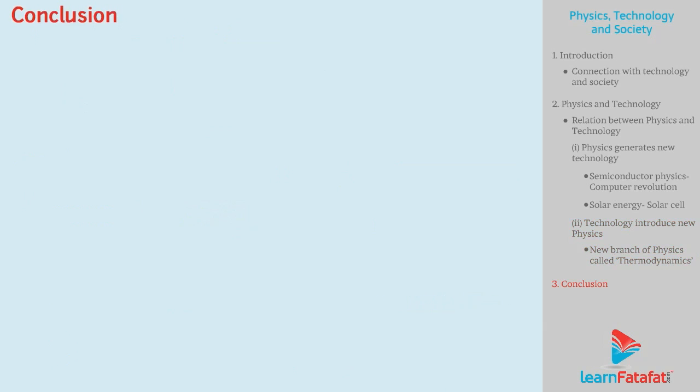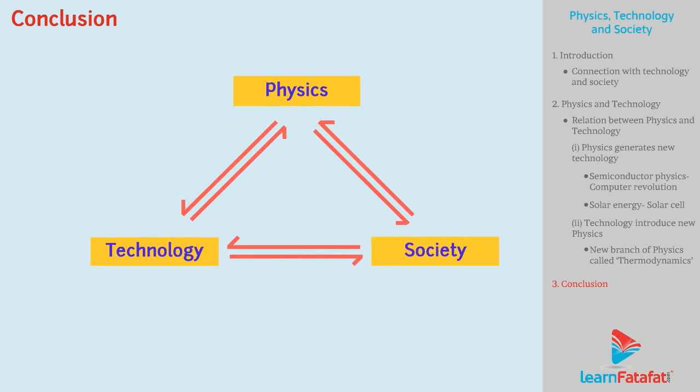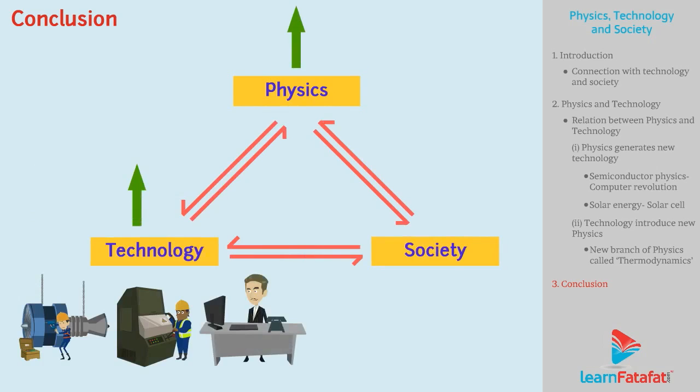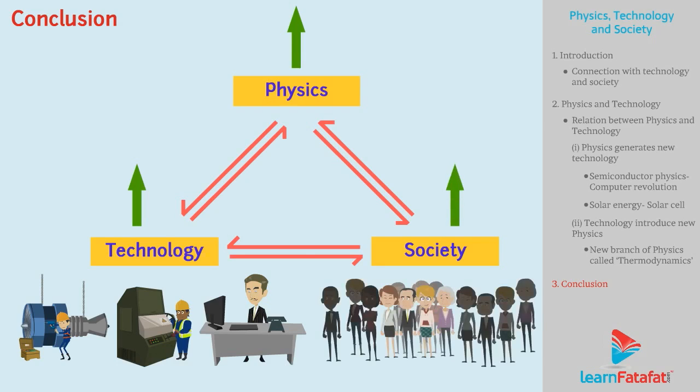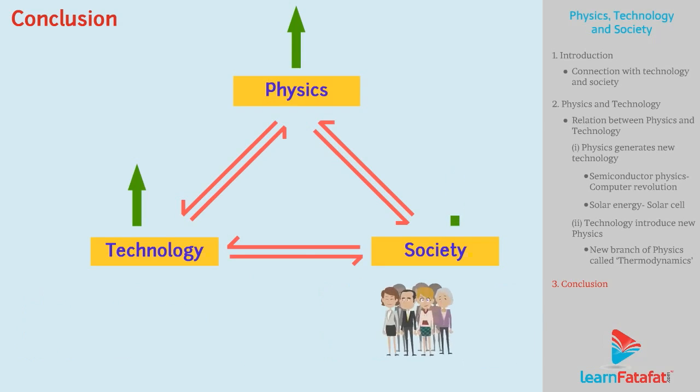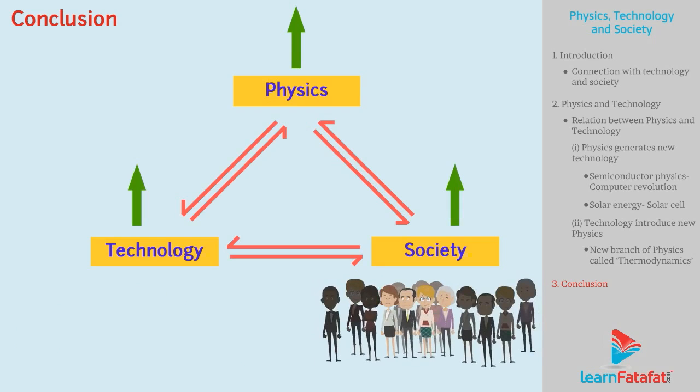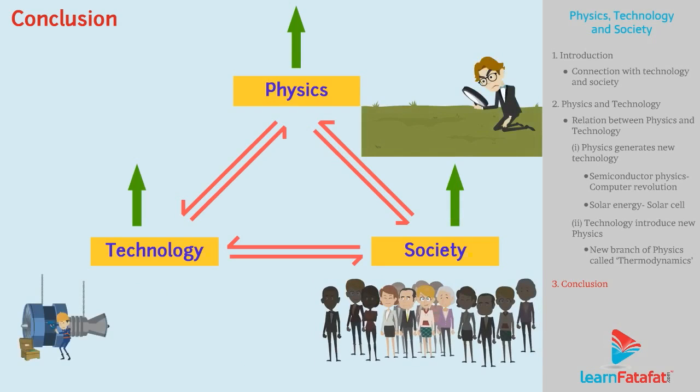So friends, to summarize this discussion, we can say that Physics, Technology and Society are interrelated. Each have impact on other. If physics grows, then technology will grow, and simultaneously society will grow. Alternatively, if society grows, then there will be more research and new technologies.